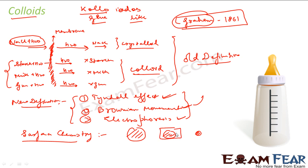These colloids have a huge surface area. If you take one particular compound and break it into smaller and smaller pieces, the surface area increases — because of the smaller size, they have a good surface area per unit mass. This huge surface area per unit mass is responsible for all of these special properties. We will discuss more properties and show you how surface area is responsible for them — that's the reason why you are studying colloids in this surface chemistry chapter.